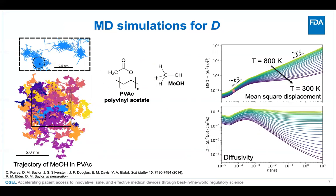If we take those trajectories and average them, we get the mean squared displacement — these characteristic curves shown here. At very short times, we're in the ballistic regime where the methanol molecules are bouncing around in a little cage. At longer times, we get to the diffusive regime with characteristic slopes T-squared and T-to-the-one. At intermediate times, things get interesting — there's a plateau value where molecules are somewhat trapped in that cage until they can escape and start diffusing. At lower temperatures, things get trapped more easily, so the diffusivity is lower.